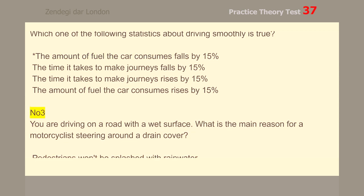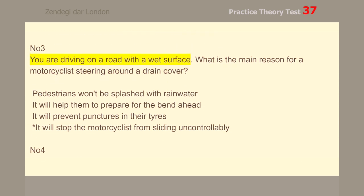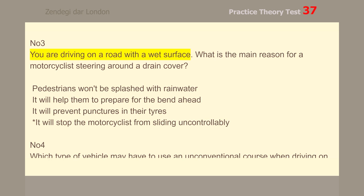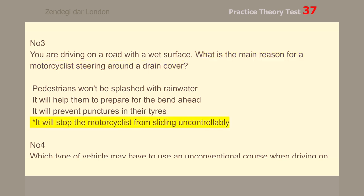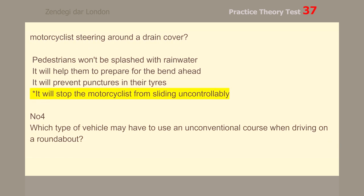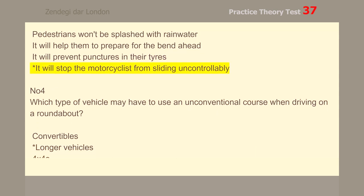Number 3. You are driving on a road with a wet surface. What is the main reason for a motorcyclist steering around a drain cover? It will stop the motorcyclist from sliding uncontrollably.